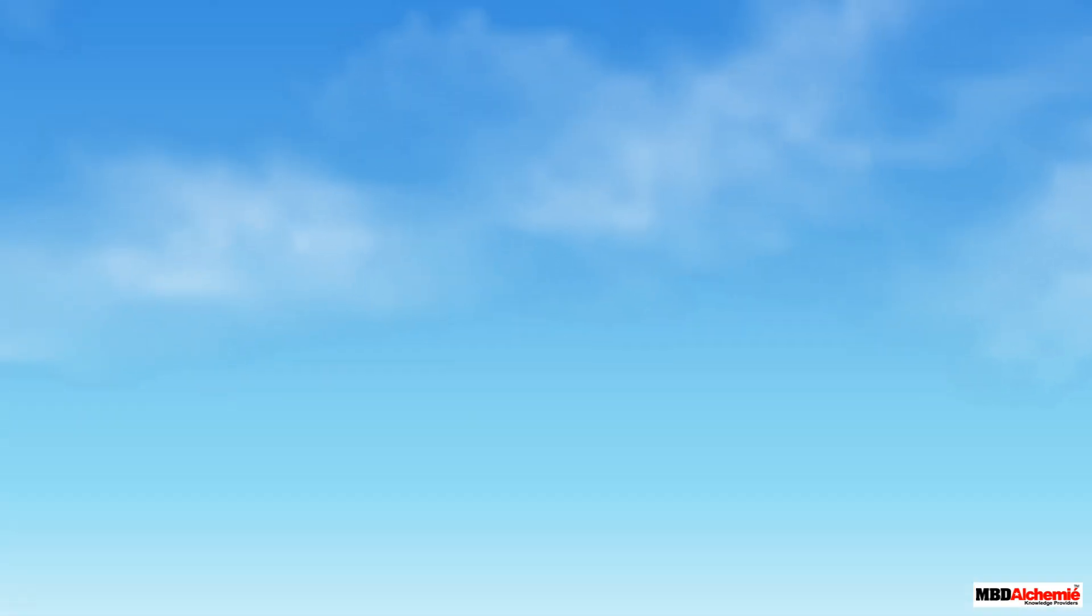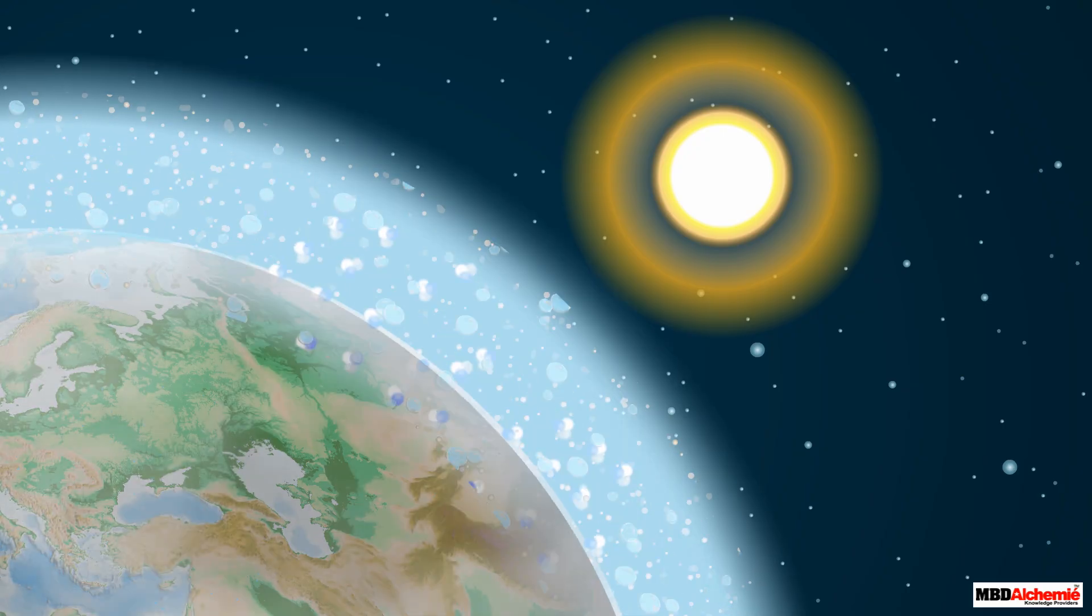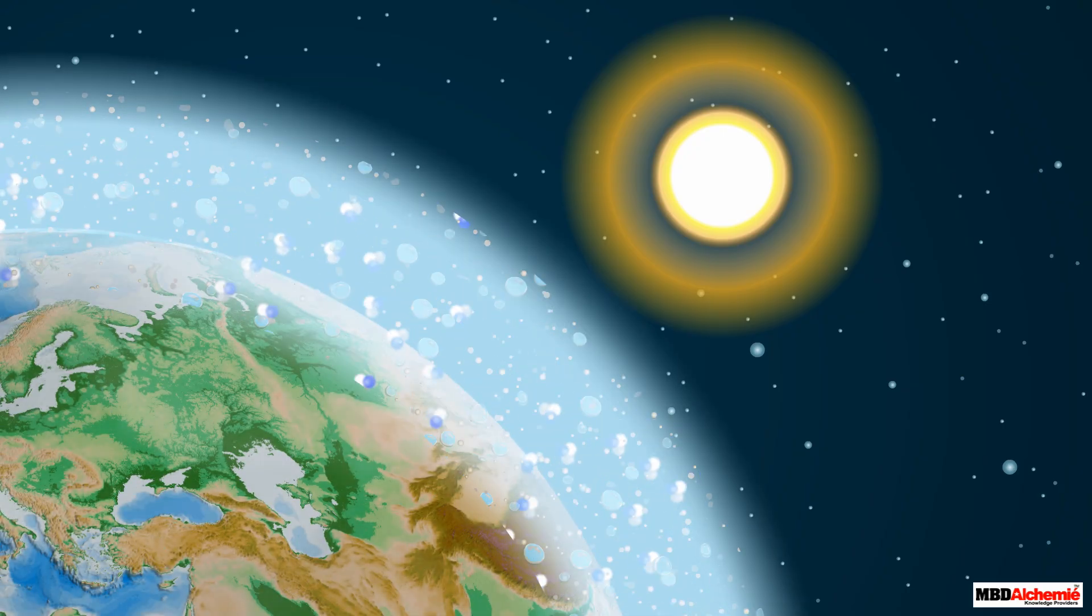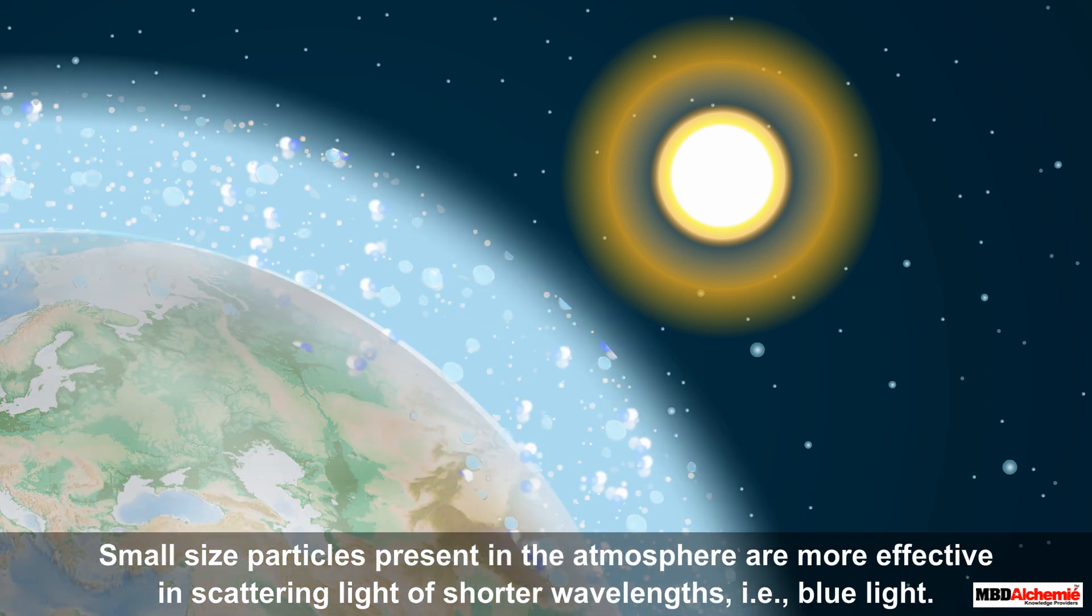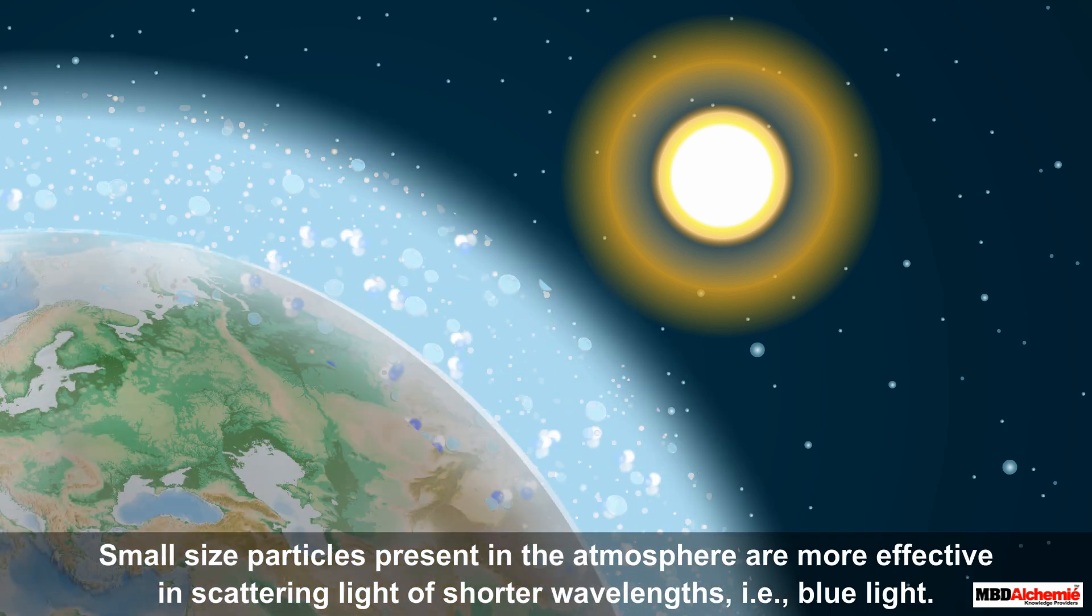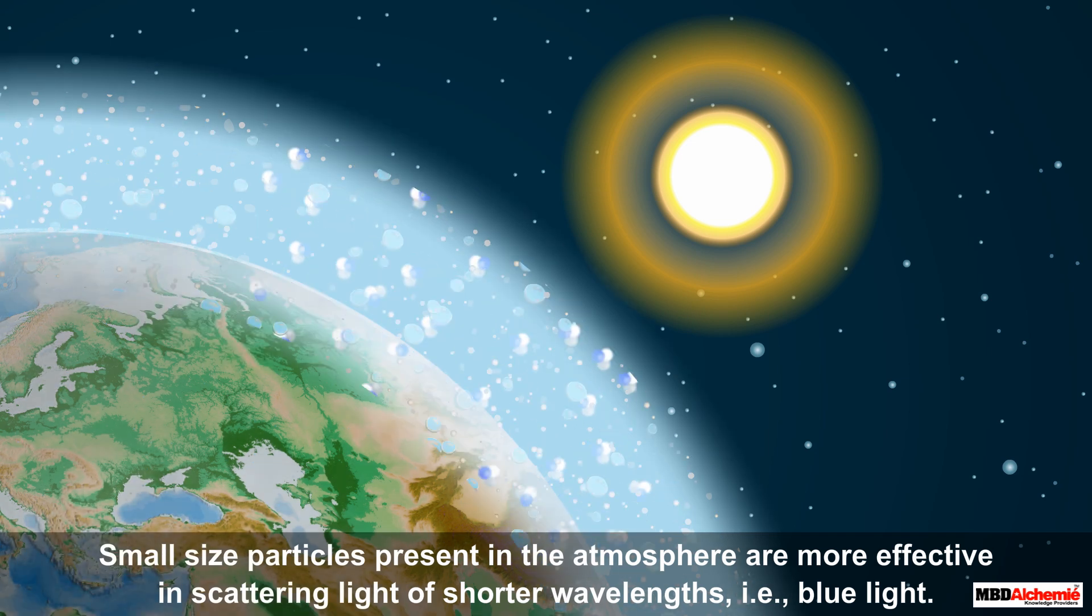Let us now come to the blue color of the sky. The molecules of air and other fine particles in the atmosphere are of very small size. These are more effective in scattering light of shorter wavelengths, that is, blue light.